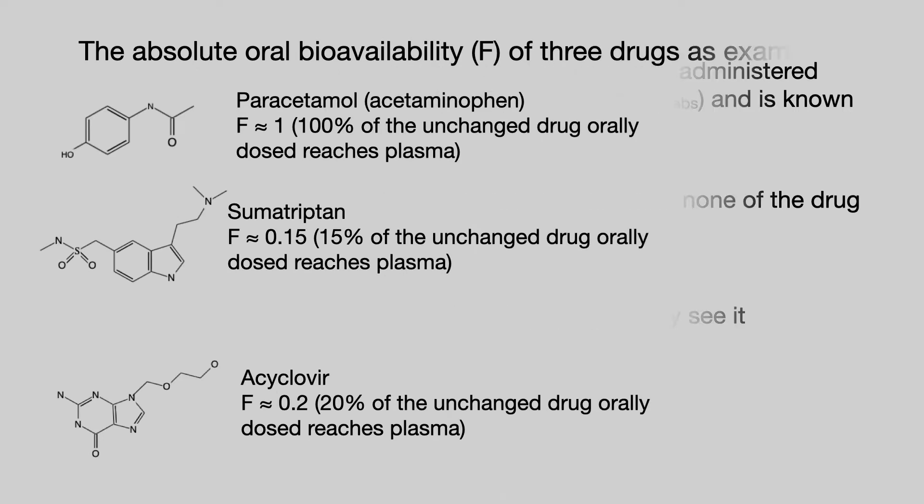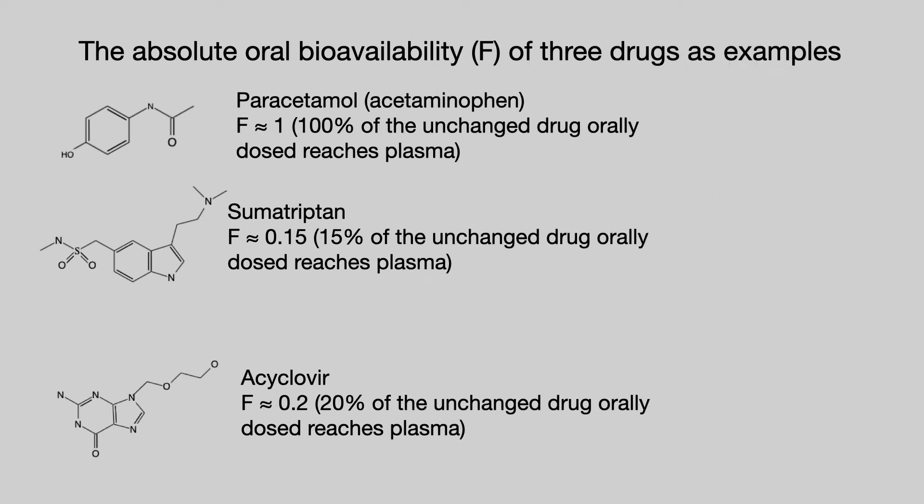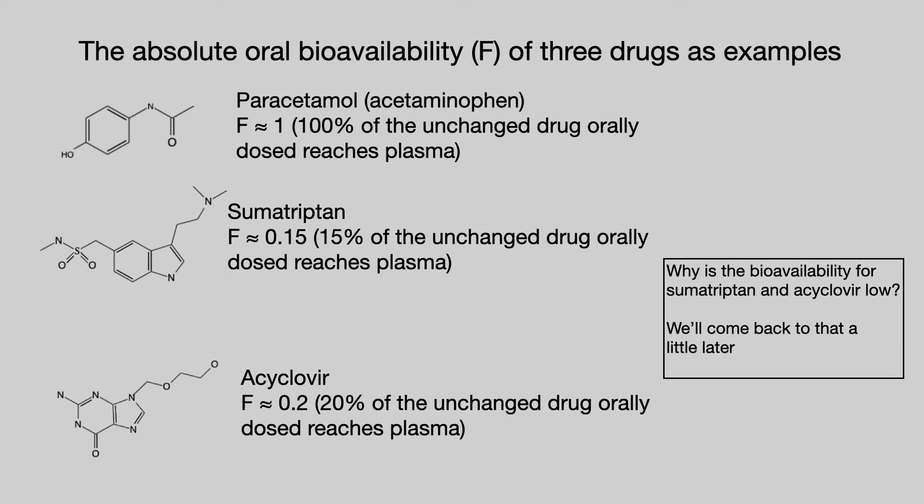Let's look at three drugs as examples. Paracetamol, or acetaminophen depending on where you live, has an F close to 1, meaning close to 100% of the drug reaches the plasma. Sumatriptan has an F around 0.15, meaning only around 15% of the drug reaches plasma. Acyclovir has an F around 0.2, meaning about 20% of the drug reaches plasma. We'll come back to why sumatriptan and acyclovir have low bioavailability in just a moment.